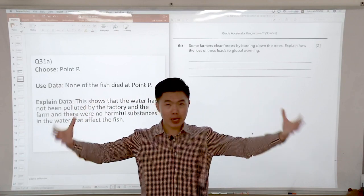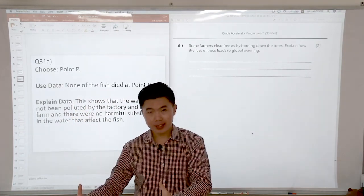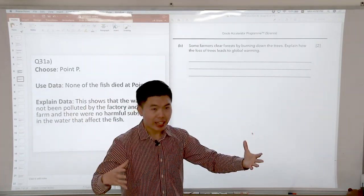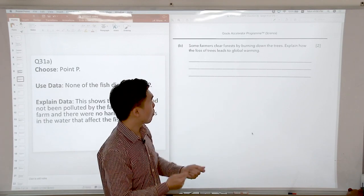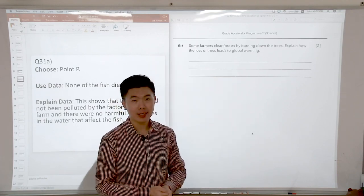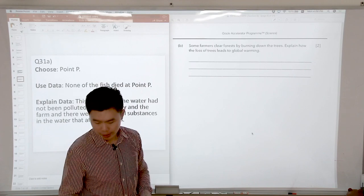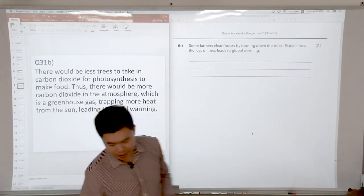So when there's more carbon dioxide, which is a greenhouse gas, then more heat from the sun will be trapped by these greenhouse gases, and this will lead to global warming. So here is how I would phrase my answer.